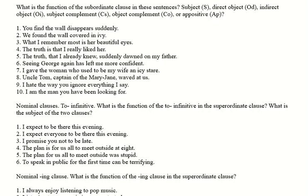The last one: 'to speak in public for the first time can be terrifying.' We've got something can be something — the verb to be again. 'To speak in public for the first time' is what is described as being terrifying, so all of that is the subject of the verb form 'can be.' Now, what's the subject of 'to speak in public'? This is the whole point of a non-finite form — the subject is everybody, anybody. We understand this as meaning all people. That's why we use the infinitive in this sense — it deliberately opens up the subject to be basically anybody you like.